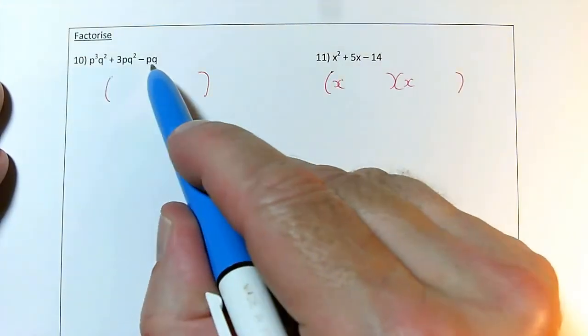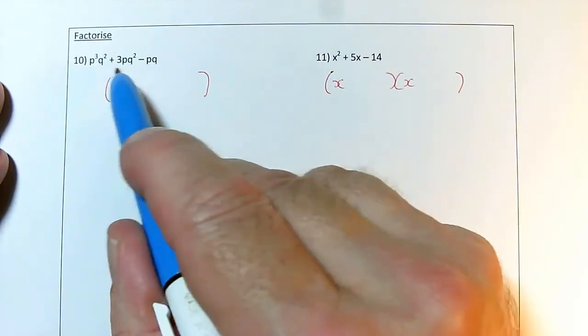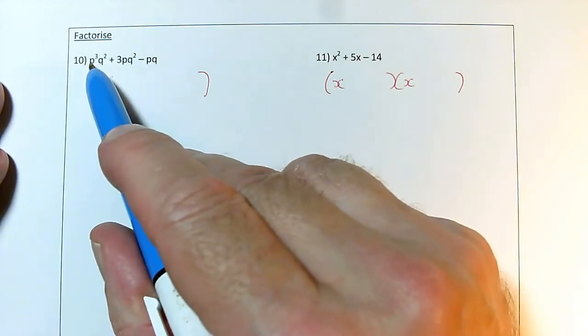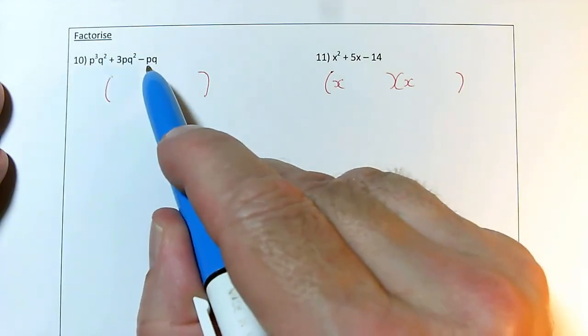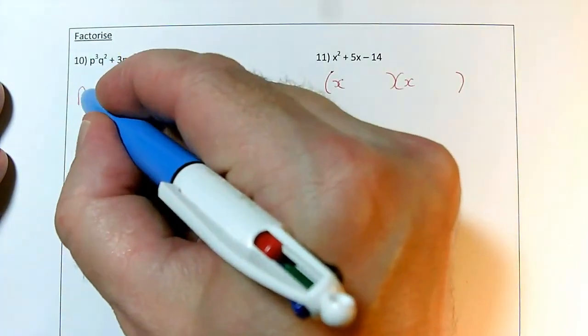What can each of these be divided by? Well, there's nothing in terms of numbers. In fact, there's just a 1 here and just a 1 here. But in terms of p's, I've got p cubed, I've got p, I've got p. The highest power of p that appears in everything is just p, p to the power of 1.